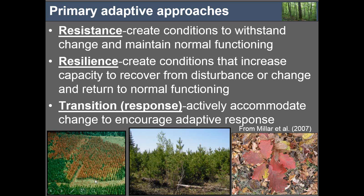The second approach is resilience — accepting that things are going to change, but doing management actions that increase the forest's capacity to recover and absorb that change. This might mean establishing a well-developed understory of advanced regeneration so that following a windstorm event, even if mature trees are lost, the area is rapidly recaptured by desired species. Or resilience might mean increasing the representation of non-ash species in sites at risk from emerald ash borer, such that even if ash dies, other species are there to grow and function. Resilience still tries to maintain current conditions to some degree but allows mechanisms for the forest to respond and absorb change.